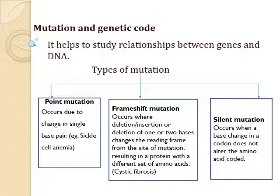Let's see mutation and genetic code. Studying mutation helps to understand the relationships between genes and DNA. Mutation is the change that occurs in our DNA sequence due to environmental factors such as UV light, or due to mistakes caused when the DNA is copied. Mutations are of three types: point mutation, frameshift mutation, and silent mutation.